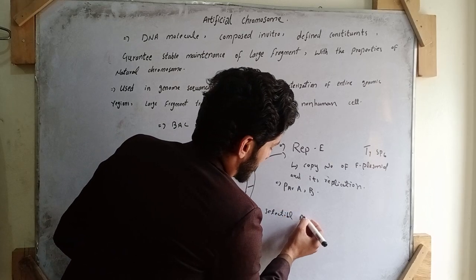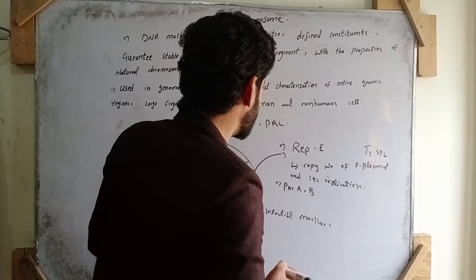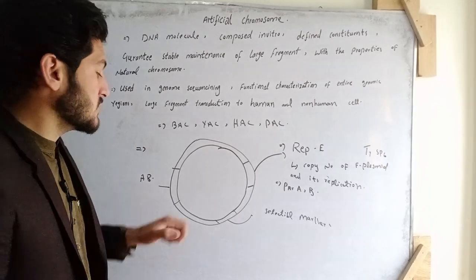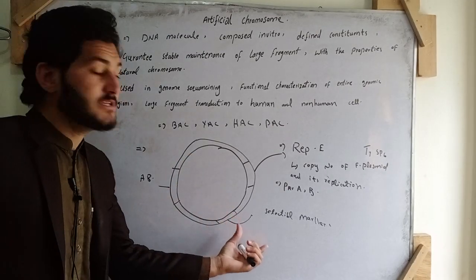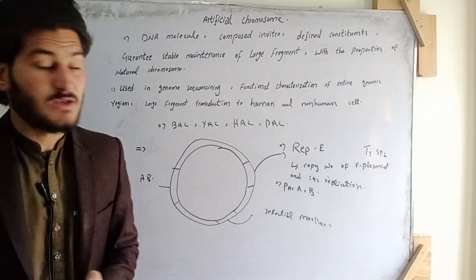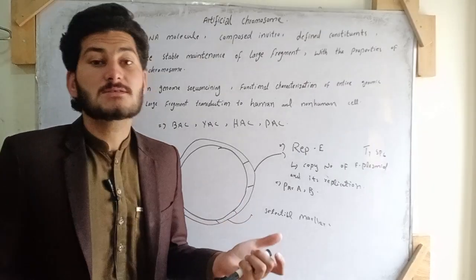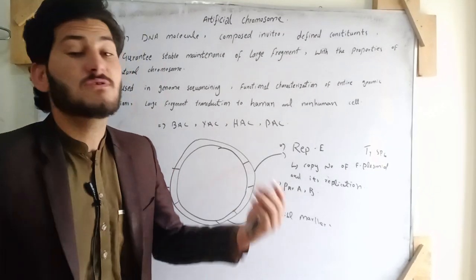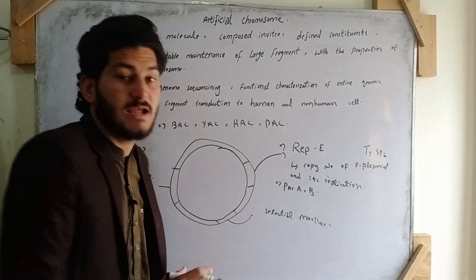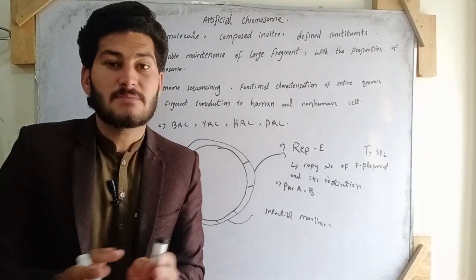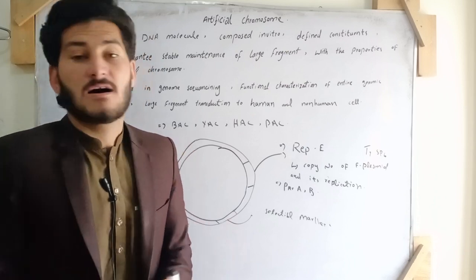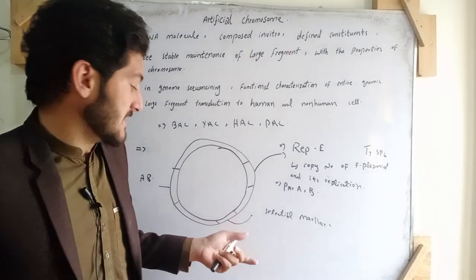The third portion is the selectable marker. We use the selectable marker for the screening process. When we insert our desired sequence into a plasmid, this region helps check whether our desired sequence has been inserted or not. It contains different antibiotic resistance genes like ampicillin, chloramphenicol (MPCD), and tetracycline gene sequences.